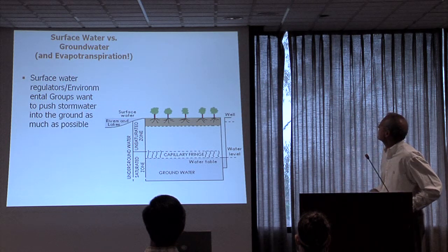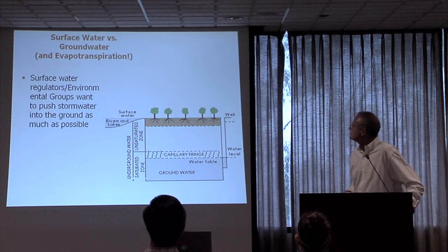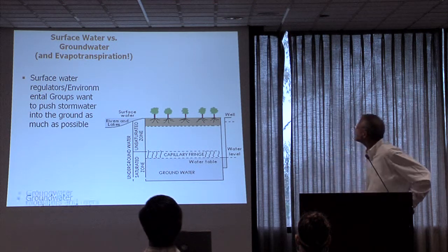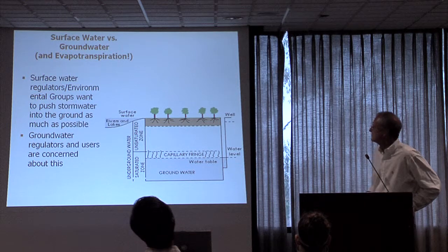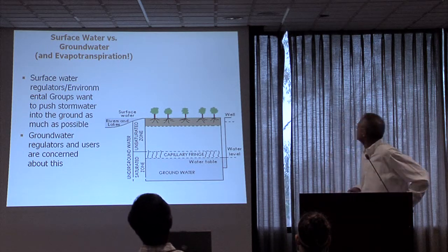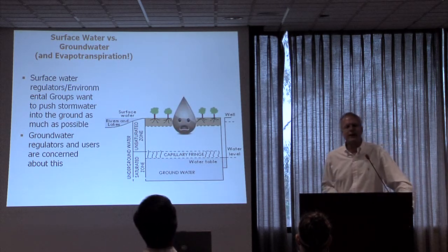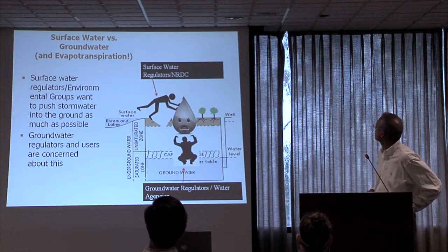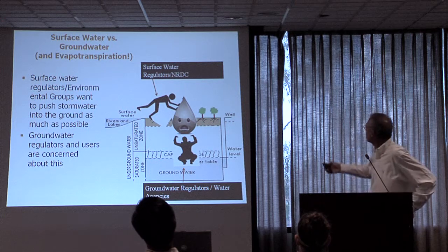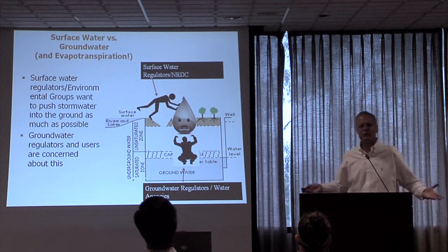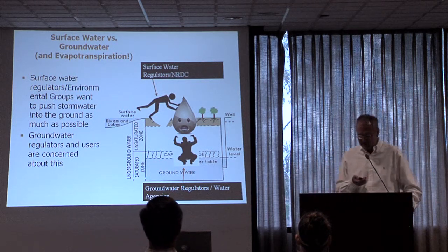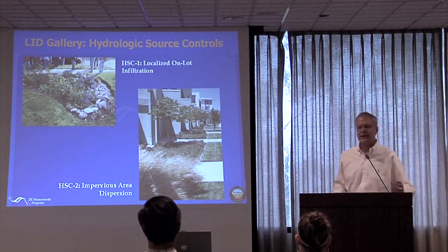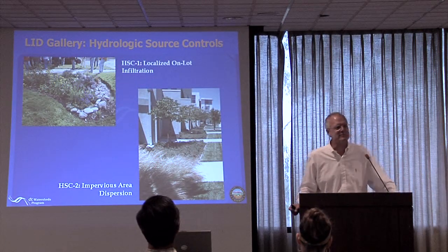Surface water regulators and environmental groups want to push stormwater into the ground as much as possible or evapotranspirate it. Water regulators and users are concerned about this. So here's a little dirty raindrop — you've got your NRDC and the regulators trying to push it in the ground, and you have the groundwater regulators and the water agencies trying to push it up, and the poor raindrop is screaming, wondering where to go. I thought that would be a useful bonus slide to frame the subject.